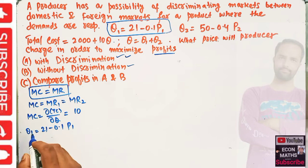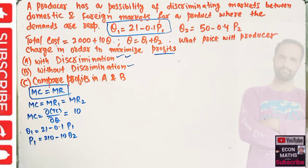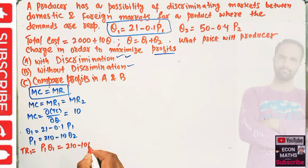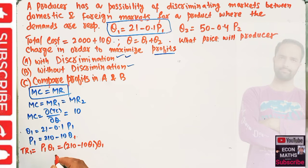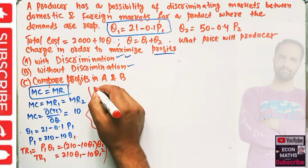Solving for P1 gives us P1 = 210 - 10Q1. Total revenue in the first market equals P1 × Q1, which is (210 - 10Q1) × Q1, giving us TR1 = 210Q1 - 10Q1².